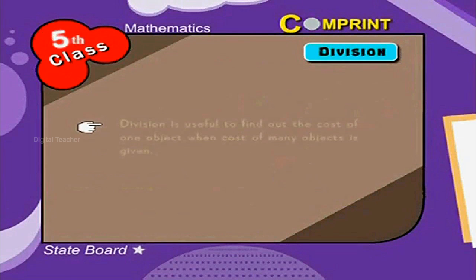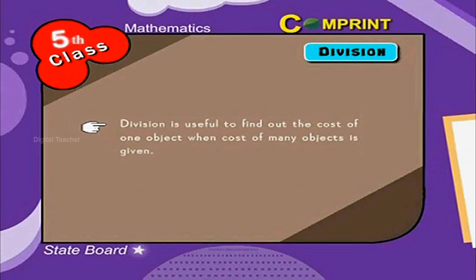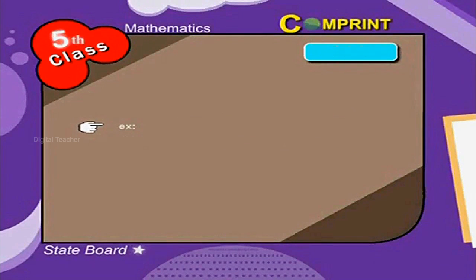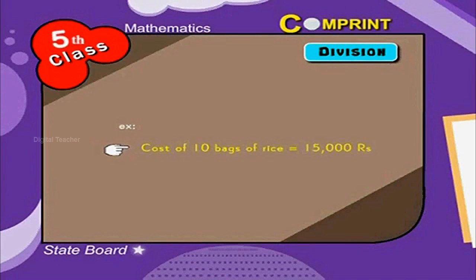Division is useful to find out the cost of one object when cost of many objects is given. For example, cost of 10 bags of rice is 15,000. What is the cost of one bag?